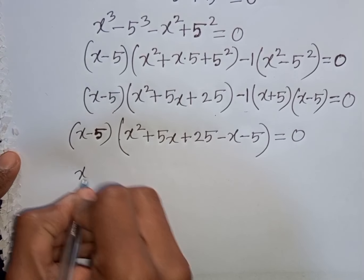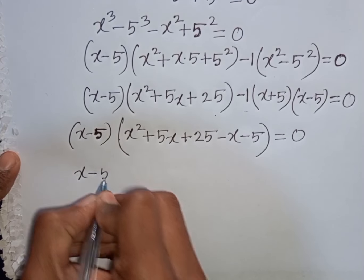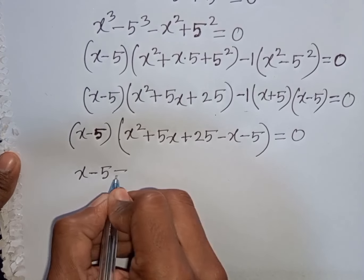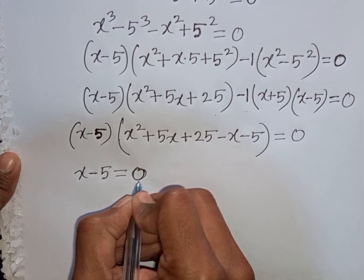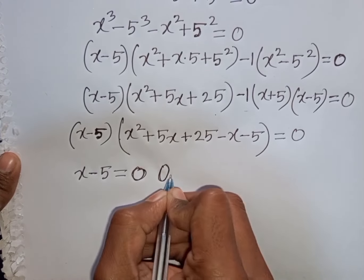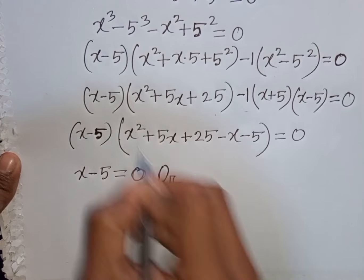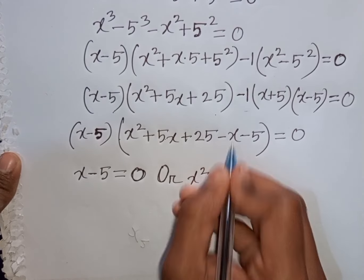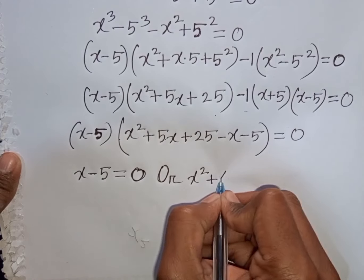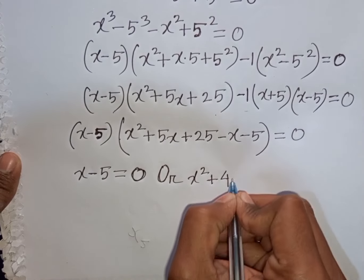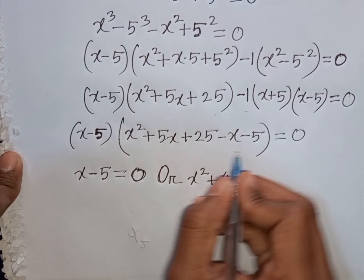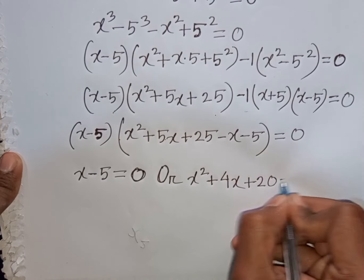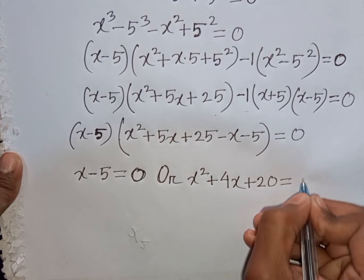Now we can write: x minus 5 equal to 0, or x squared plus 5x minus x — that means plus 4x — then plus 25 minus 5 — that means plus 20 — equal to 0.